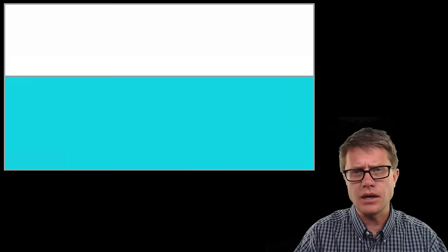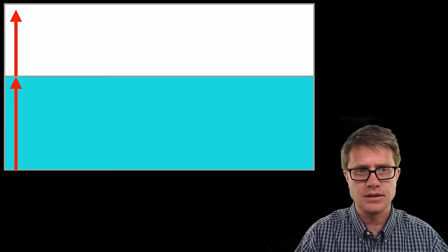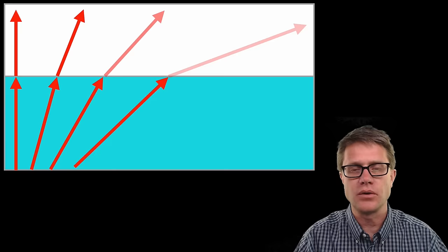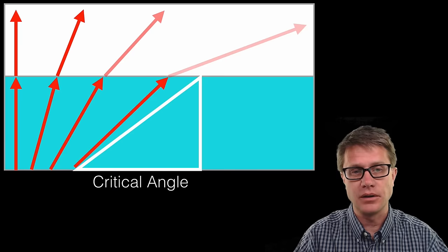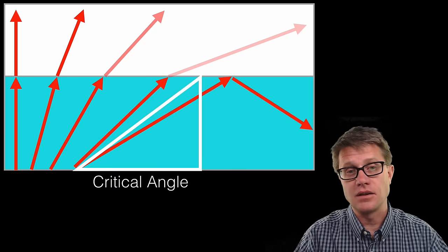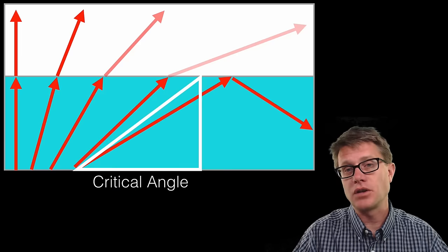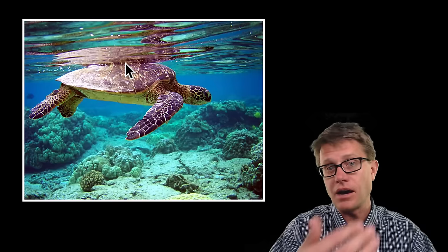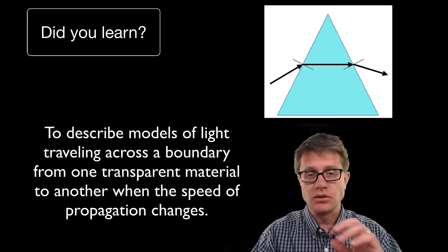If we look at light moving from a slow to a fast medium and keep turning the angle more and more, less of that light is being refracted or making its way through. Eventually we approach the critical angle. Once we reach the critical angle, light is no longer transmitted into the next medium — it is reflected back. When all of it is returned back into the original medium, we call that total internal reflection. Looking at this sea turtle, its reflection on the water surface is visible because light is being reflected back to you at that angle.